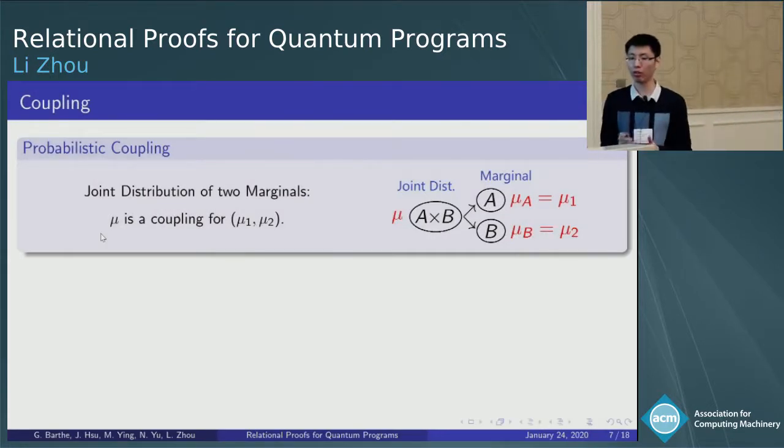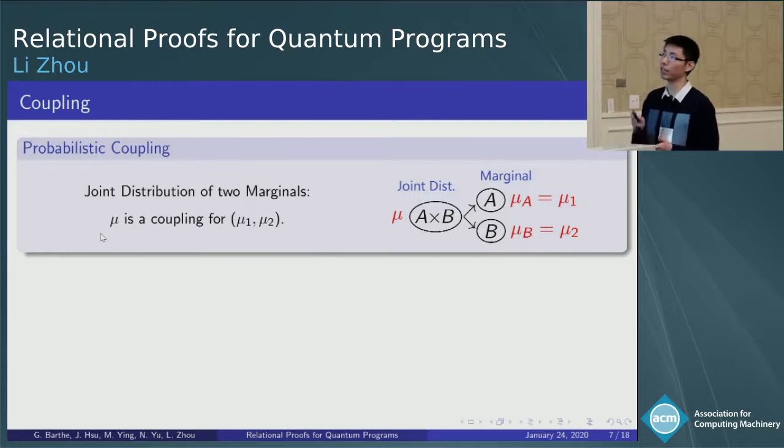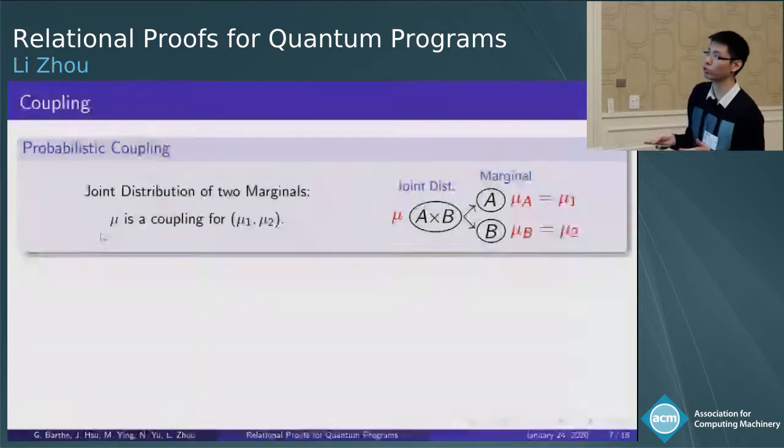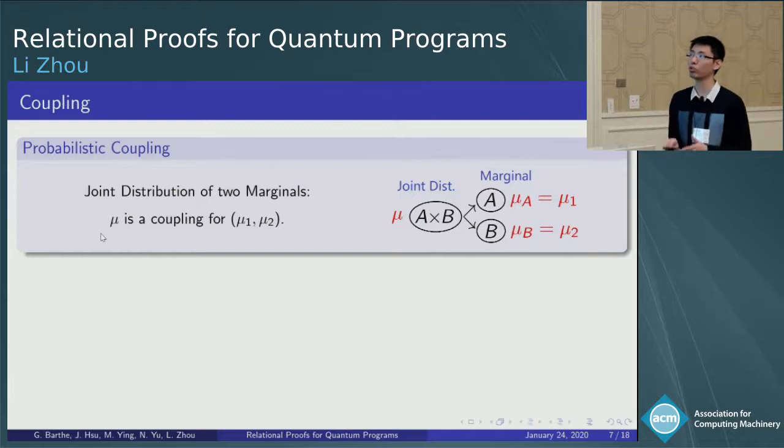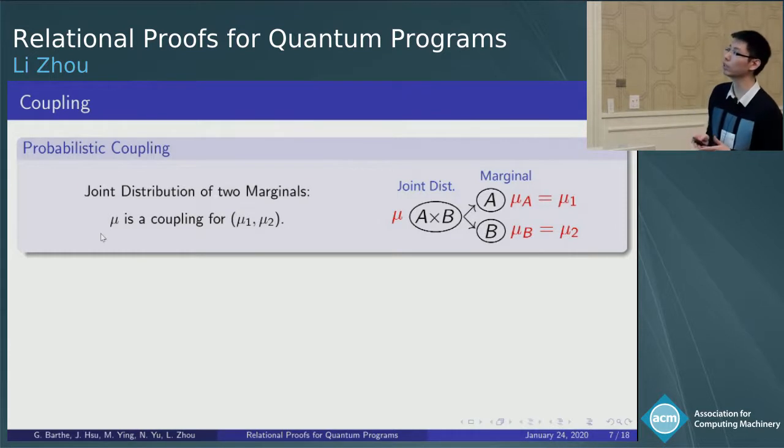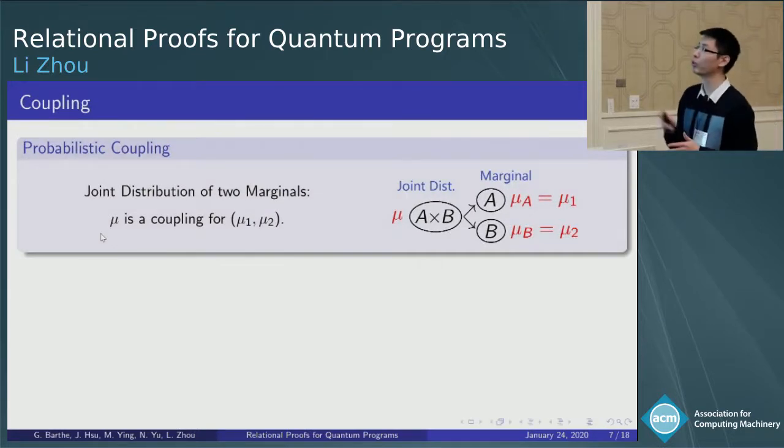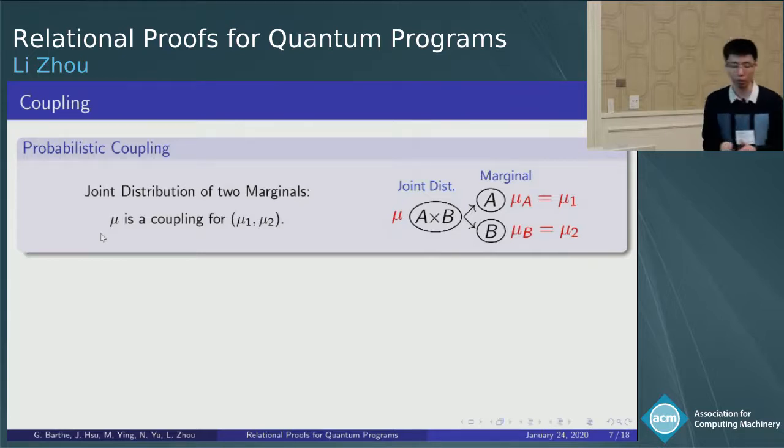Coupling is a powerful technique in relational verification, as it can be used to capture the relational properties between two distributions. Mathematically, the distribution mu is a coupling for mu1 and mu2 if its marginal muA and muB over A and B equal to mu1 and mu2 respectively.